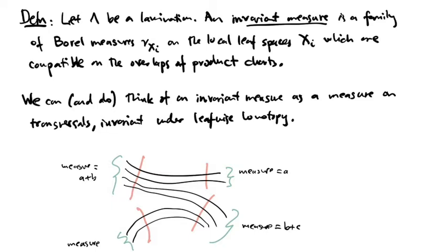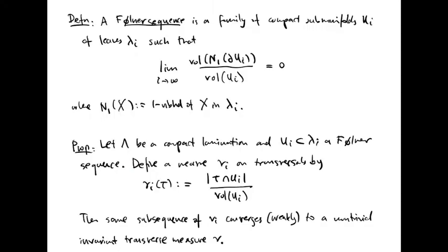Let lambda be a lamination. An invariant measure is a family of Borel measures on the local leaf spaces which are compatible on the overlaps of product charts. We can and do think of an invariant measure as a measure on transversals which is invariant under leafwise homotopy.